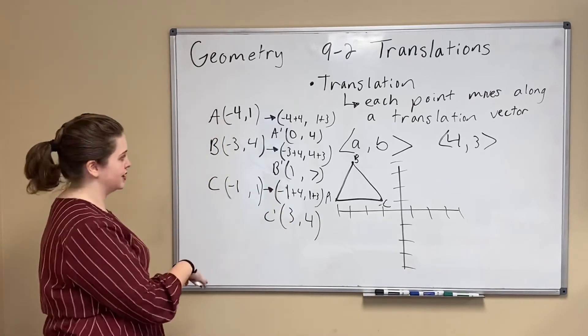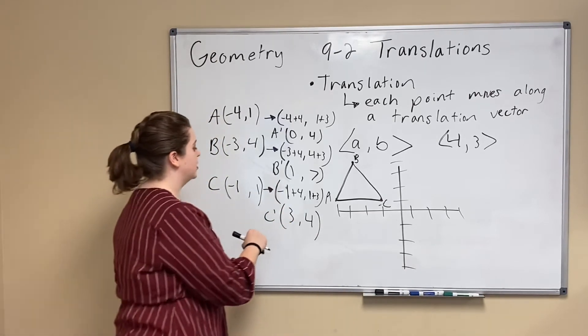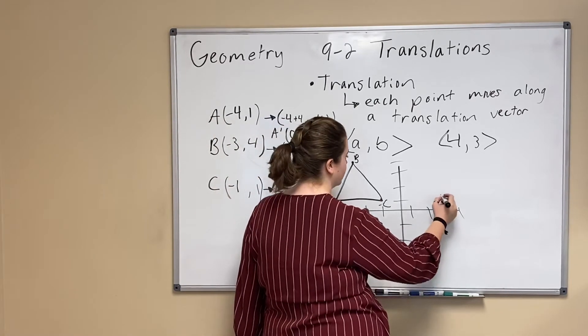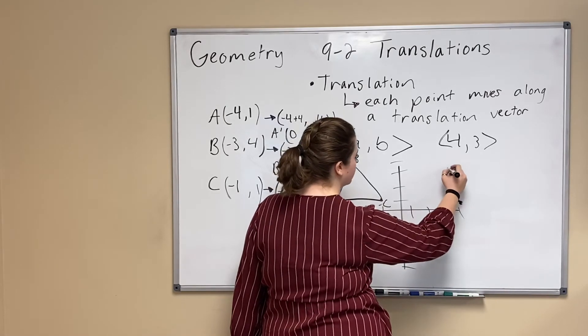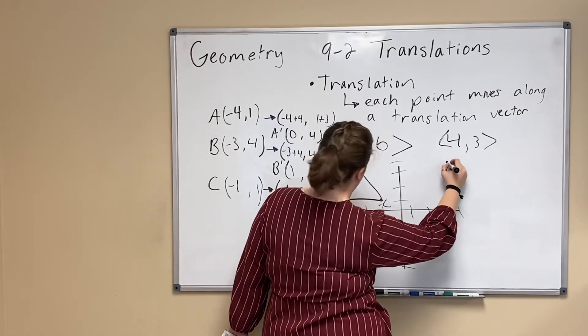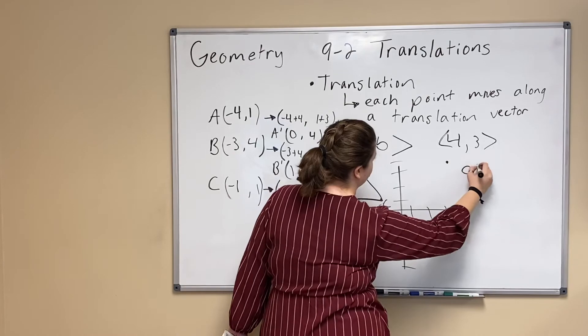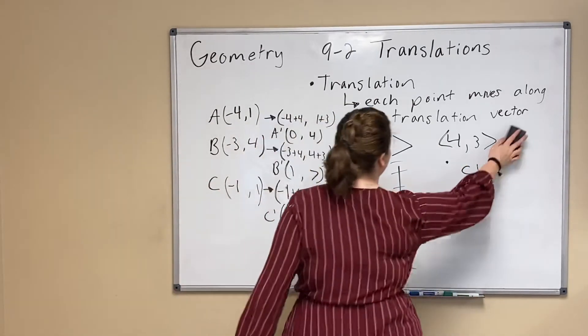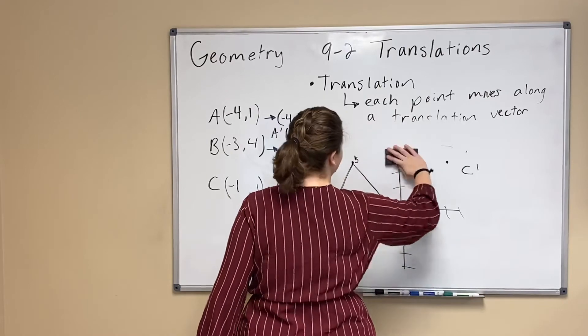Now to finish translating the triangle all I have to do is graph our new points. So if our new C is at (3,4) I'm going to go to 3... 1, 2, 3, 4. Whoops, got ahead of myself. I need to make my graph taller. Hopefully you guys got that written down.